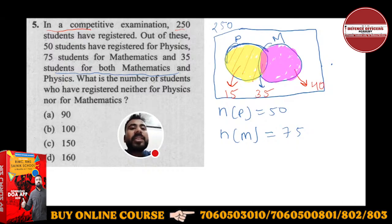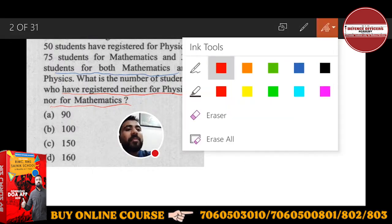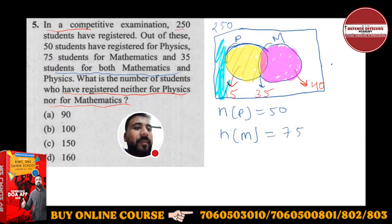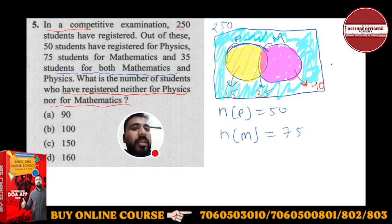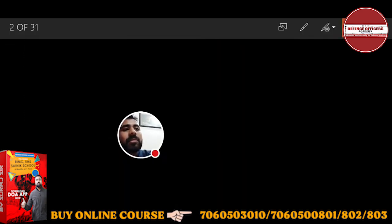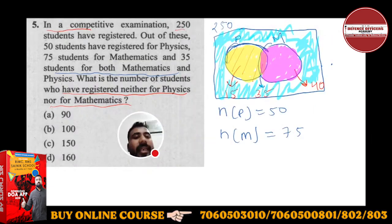Now it's very easy to calculate for me. Which are the number of students who have registered neither for physics nor for mathematics? See, total there are 250 students. This outer portion states the students those who have not registered for physics and maths. If I have to solve for this, then it will be very easy directly.